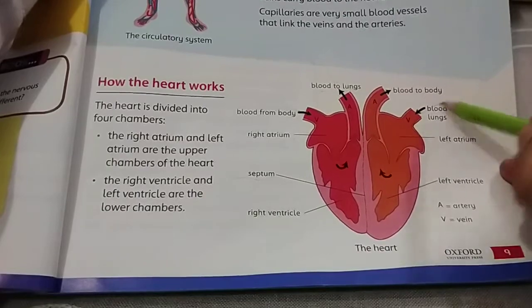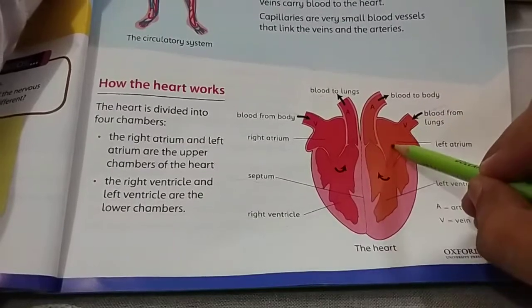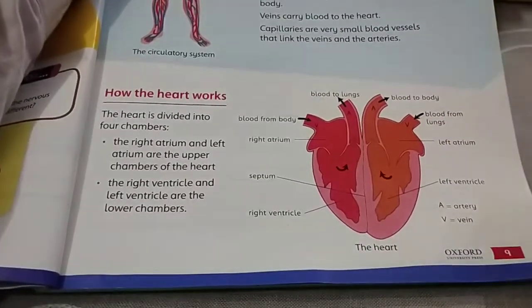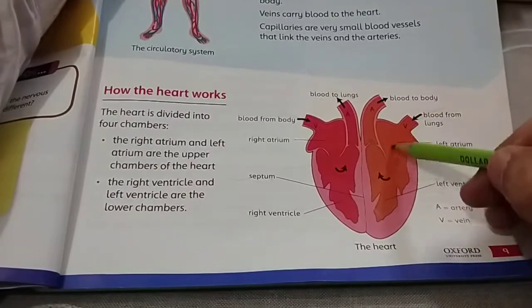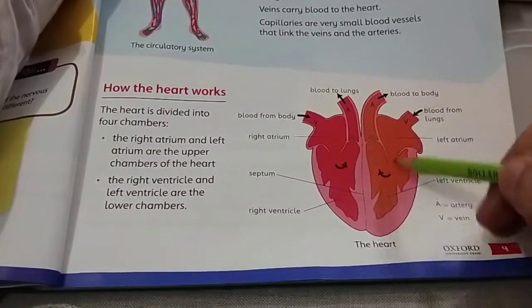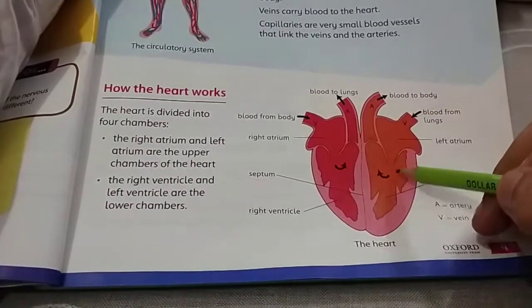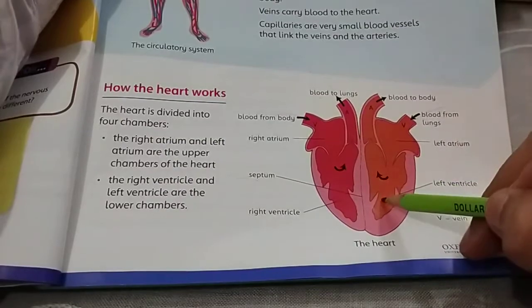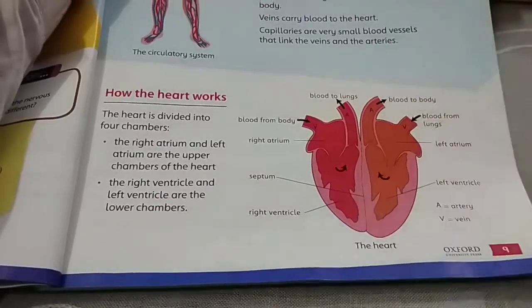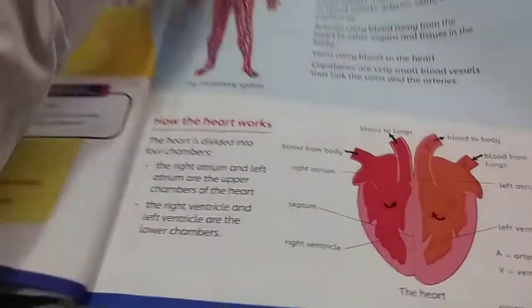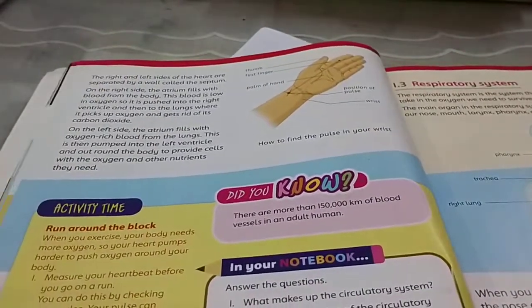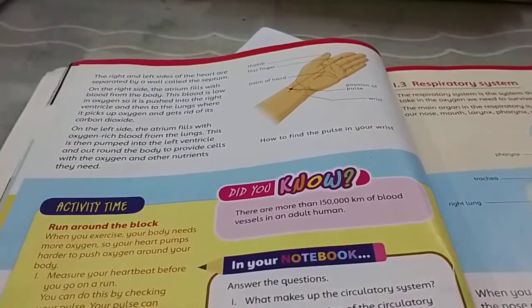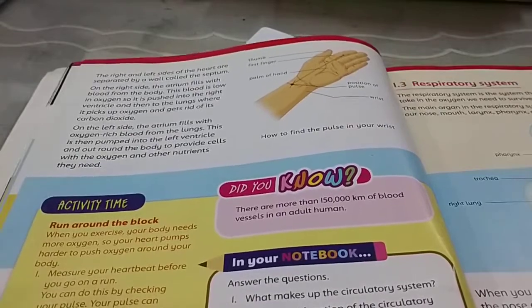The blood coming back from the lungs is rich in oxygen. The door opens and it comes to the left ventricle, then goes back out to the whole body. This is how the whole body gets food and nutrients — it is a complete circle.